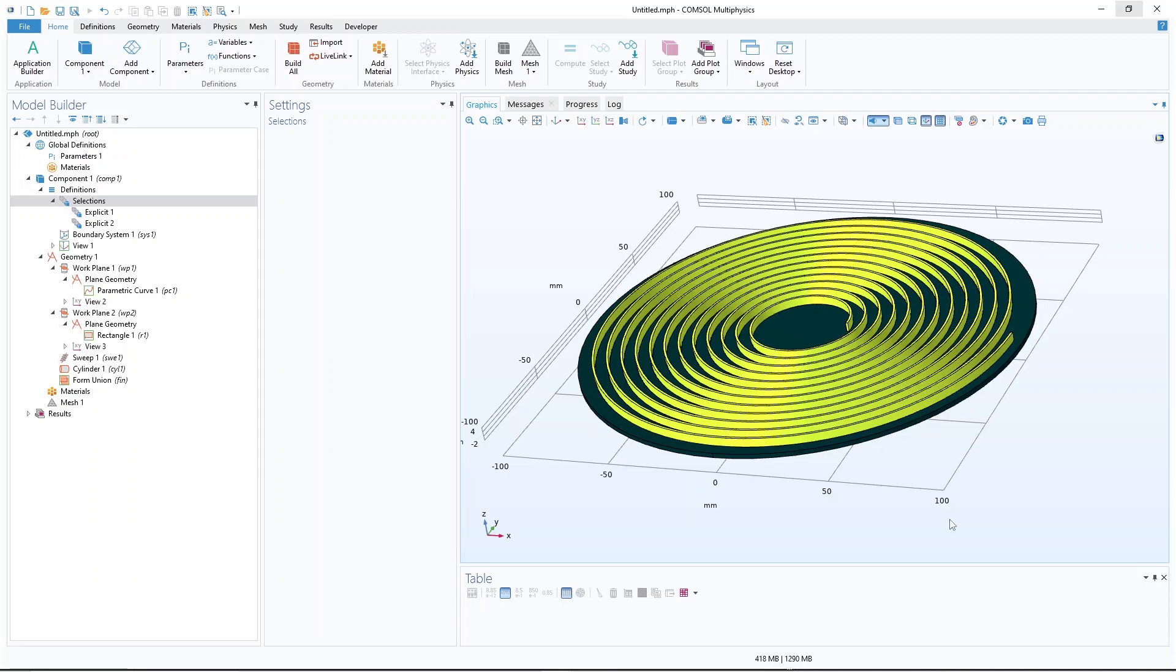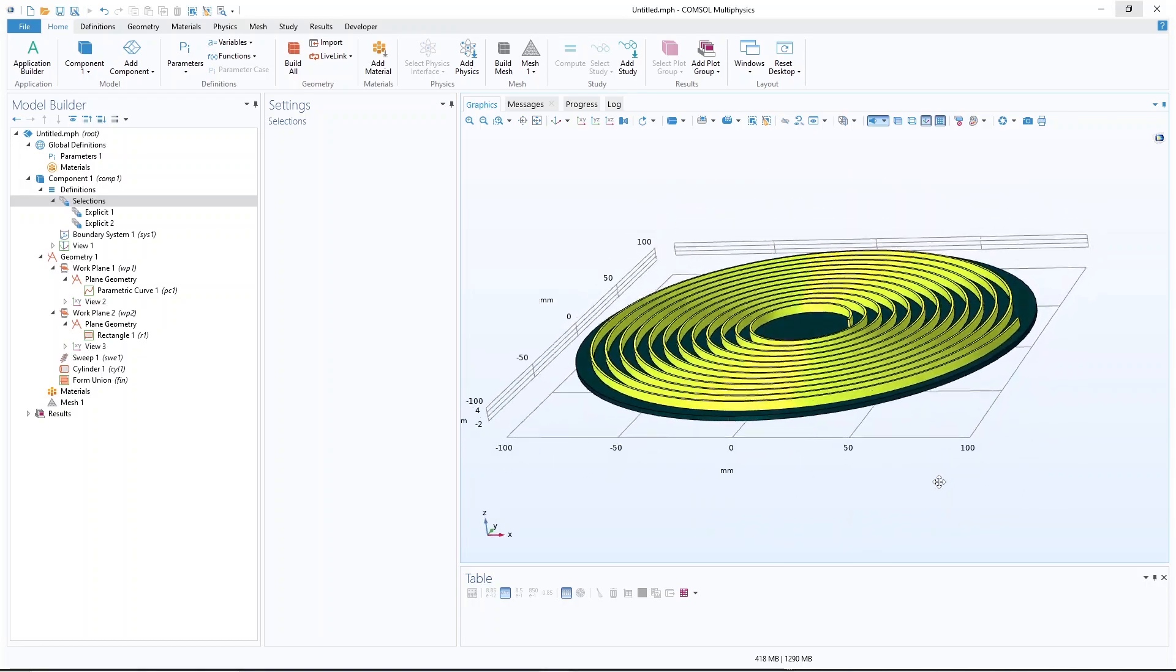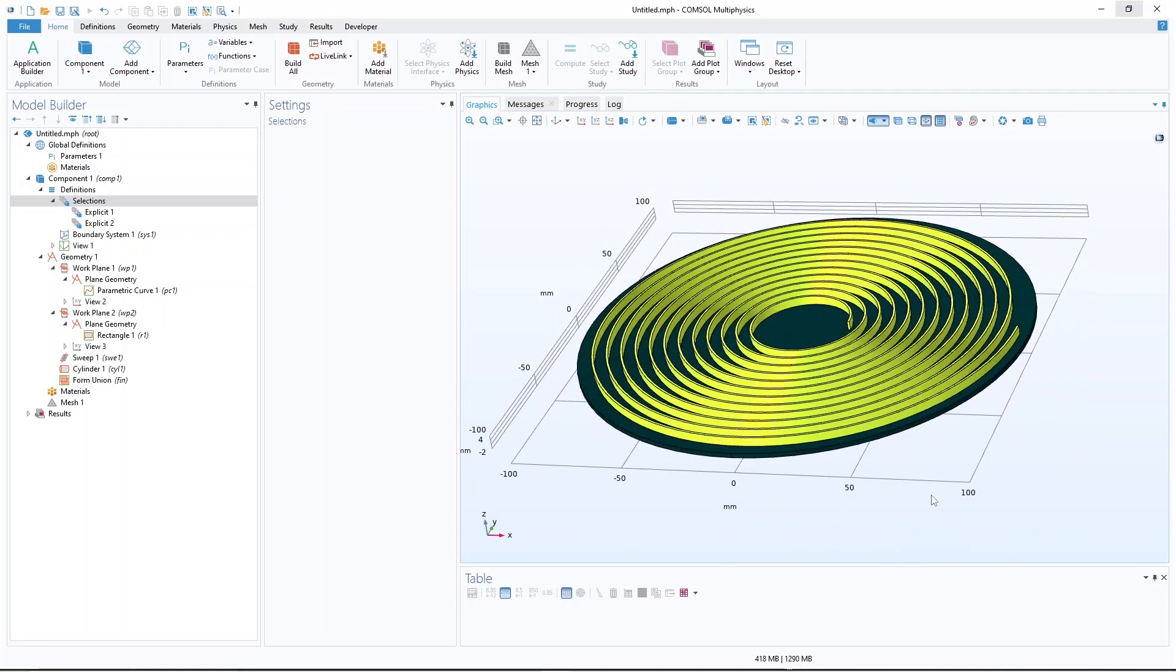Okay. So this is basically how you can make a spiral and assign different colors to domains and boundaries inside COMSOL. See you next time. Bye.